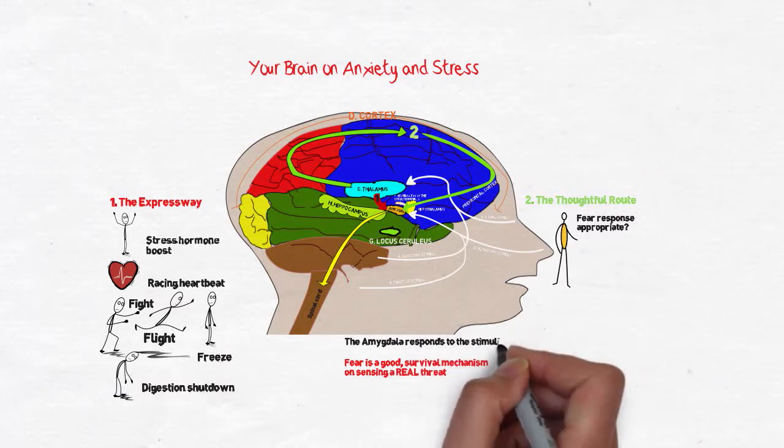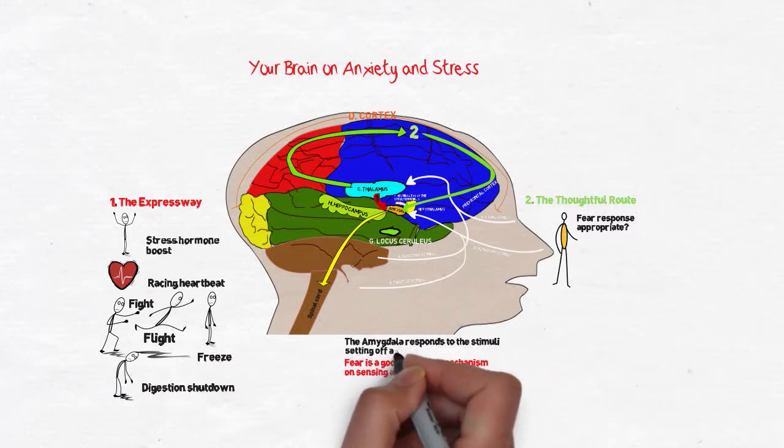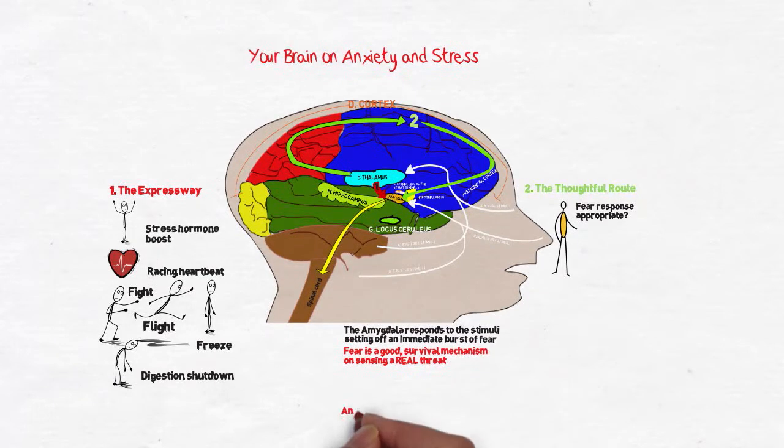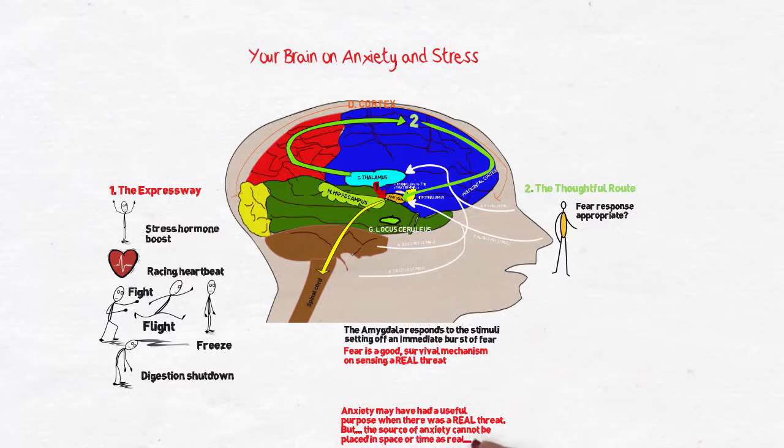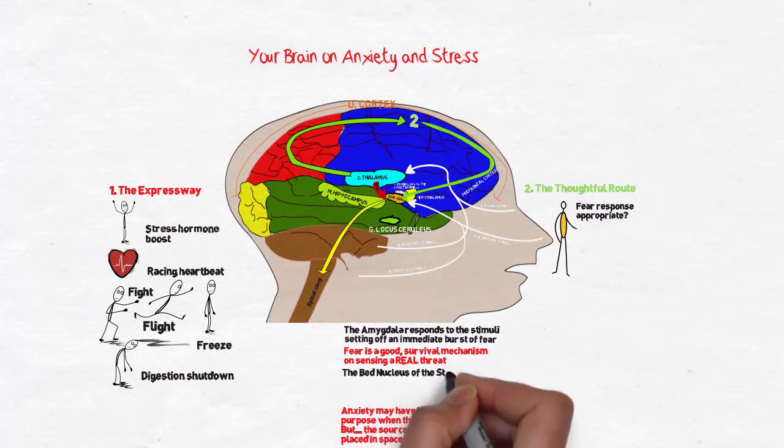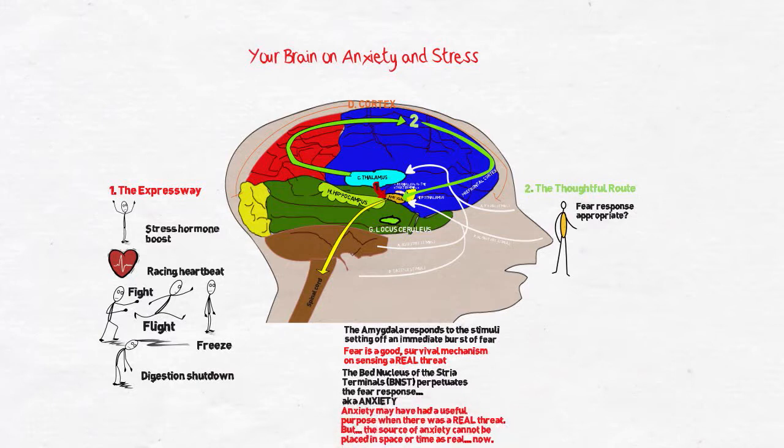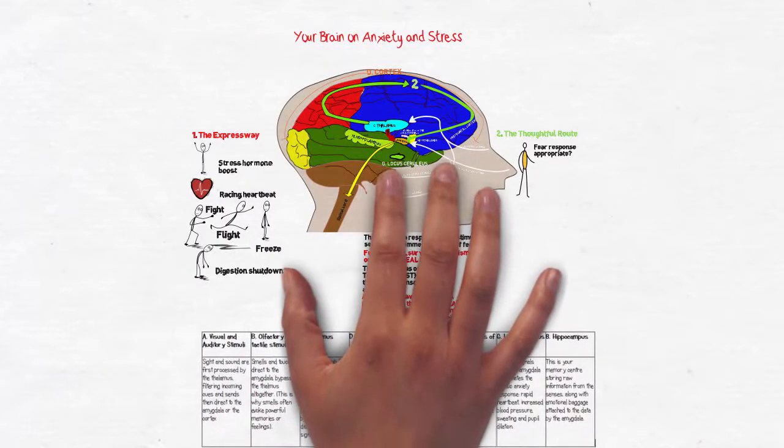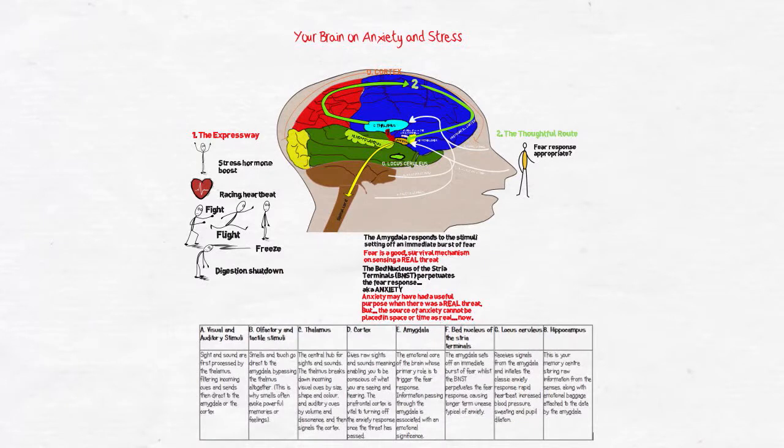Fear is a good, useful response essential to survival. However, anxiety is a fear of something that cannot be located in space and time. Most often, it is that indefinable something, triggered initially by something real that you sense, but that in itself is not threatening. But it is associated with a fearful memory. And the bed nucleus of the stria terminalis perpetuates that fear response. Anxiety is a real fear response for the individual feeling anxious, and anxiety can be debilitating for the sufferer.